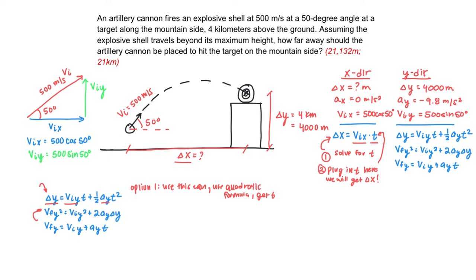Here we see that we have VFY squared. We don't actually know the final velocity when it strikes the target in the Y direction. We do know, though, our initial velocity. And we know our acceleration in the Y direction and our delta Y. So we could solve for VF.